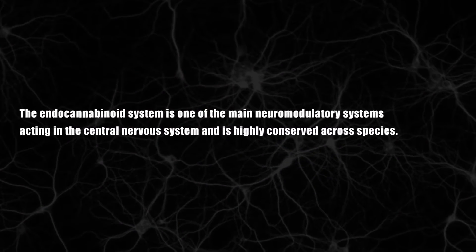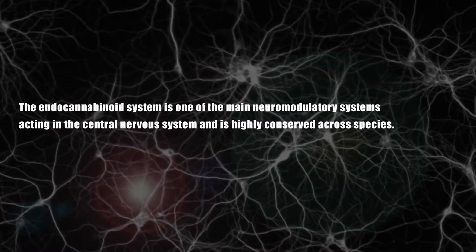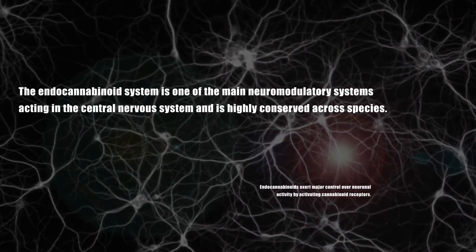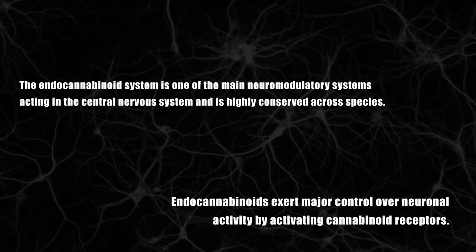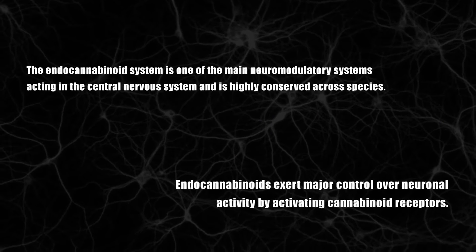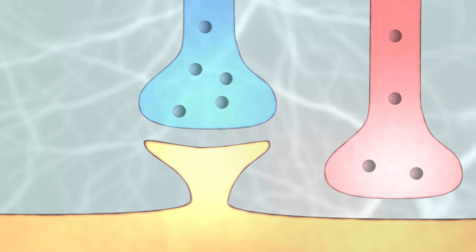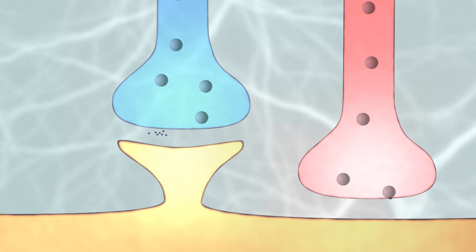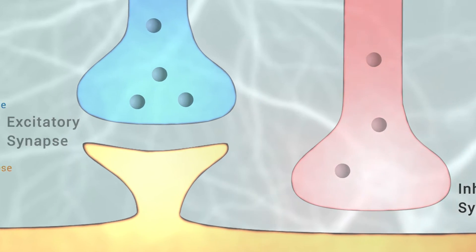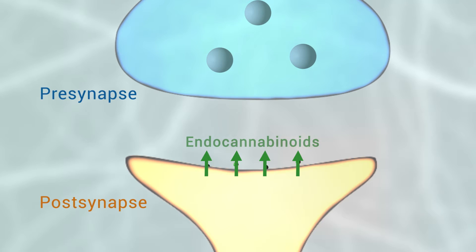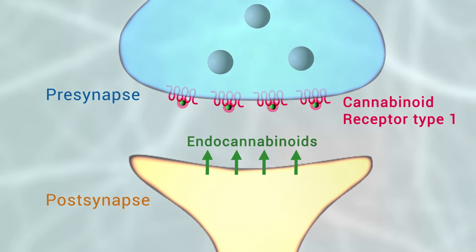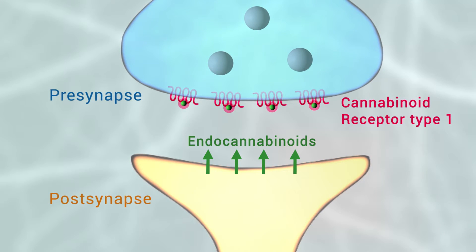The endocannabinoid system is one of the main neuromodulatory systems acting in the central nervous system and is highly conserved across species. Endocannabinoids exert major control over neuronal activity by activating cannabinoid receptors. The endocannabinoid-mediated plasticity mechanisms are found at both excitatory and inhibitory synapses in most brain areas. They primarily depend on a postsynaptic release of endocannabinoids and the retrograde activation of presynaptically located cannabinoid receptors type 1, which are abundantly expressed in most cell types.